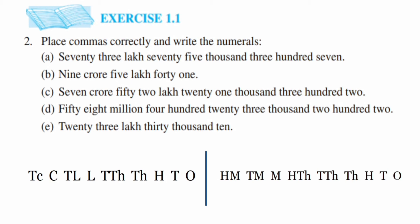The first problem uses the Indian system because the statement contains 'lakh.' They also ask us to put commas correctly. In the Indian system, the comma comes from the right side after the first three digits, then after every two digits. So the first comma is after the hundreds place — ones, tens, hundreds — then comma, followed by thousands, ten-thousands, comma, lakh, ten-lakh, comma, crore, ten-crore.